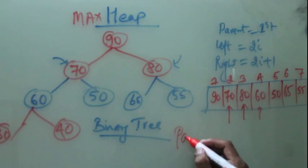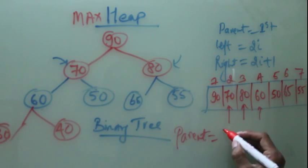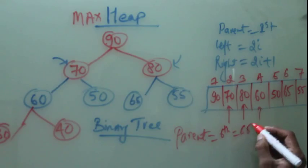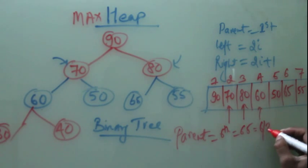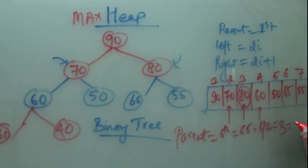So if you want to see what is the parent of sixth element, sixth element is 65. I will say 6 by 2, that is 3. So 3 is 80. So 80 is the parent of 65. So it follows the binary tree property.